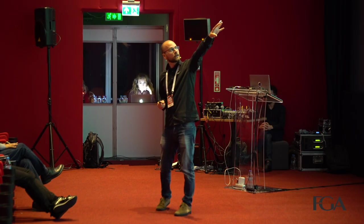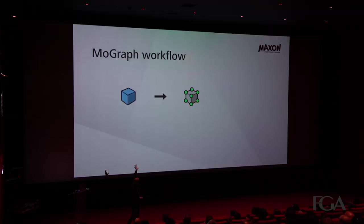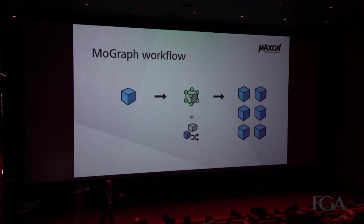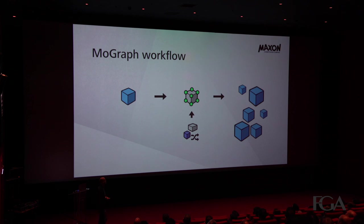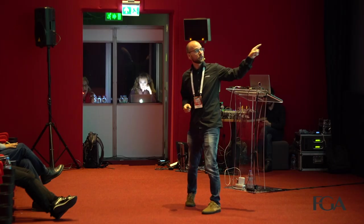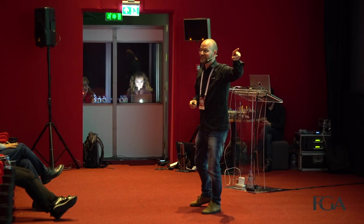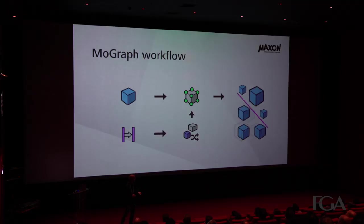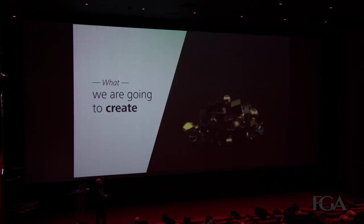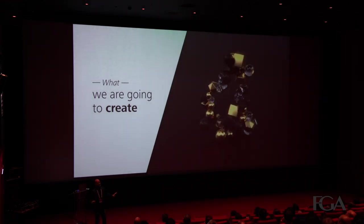Here in the middle we see a cloner. If we add an object — any object — you will create many clones. If you want to randomize the whole thing, add a random effector, and you see that everything is randomized. And if you want to mask the randomness, you add a field — for example, you have no randomness in the lower left and randomness in the top right.